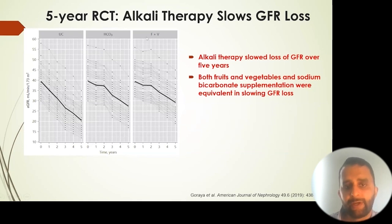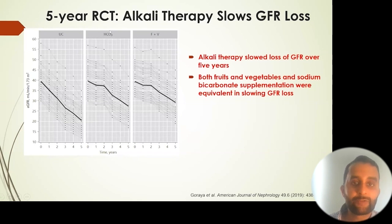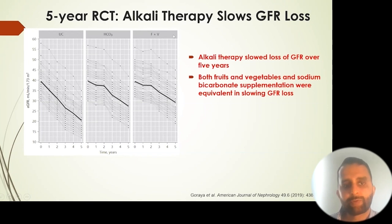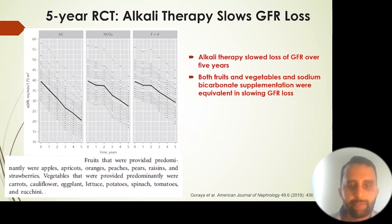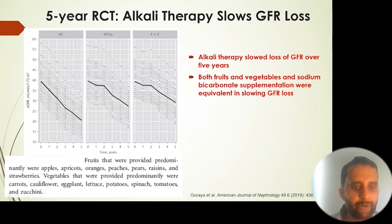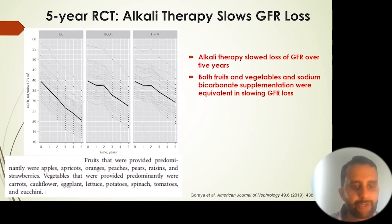For those already taking bicarbonate, that is fine, but you won't get the added benefits of fruits and vegetables — so doing it with fruits and vegetables is probably better. The fruits and vegetables used in these studies were not unusual: apples, apricots, oranges, peaches, pears, raisins, and strawberries. Vegetables included carrots, cauliflower, eggplant, lettuce, potatoes, spinach, tomatoes, and zucchini.